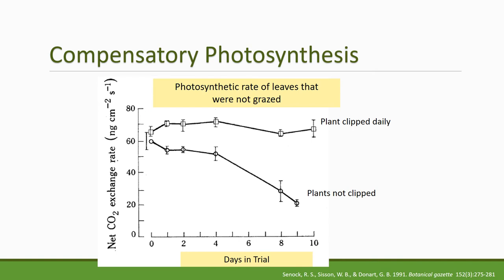Here's an example of compensatory photosynthesis in a grass. The Y-axis shows carbon exchange, which is a measure of photosynthetic activity. The top plant is the plant that was clipped daily — in a 10-day trial that plant was clipped every day, and its photosynthetic rate stays about the same throughout the trial. But the plant that was not clipped, even within 10 days as it ages, we start to see a drop in photosynthetic rate. So compensatory photosynthesis is the difference between the plant that reduced its photosynthetic rate as it got older versus a plant that maintained a high photosynthetic rate even when it was clipped.